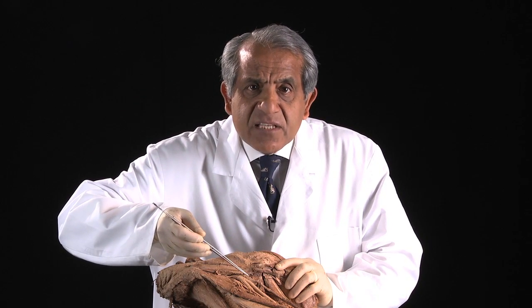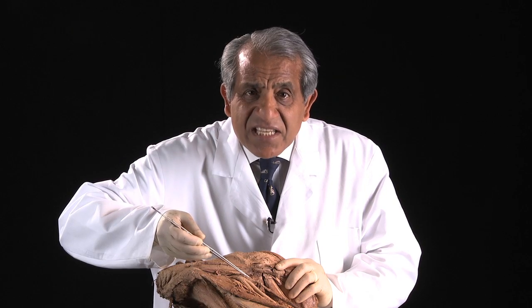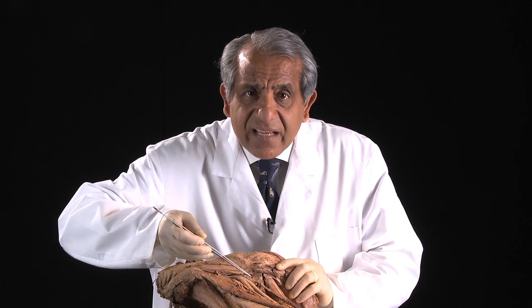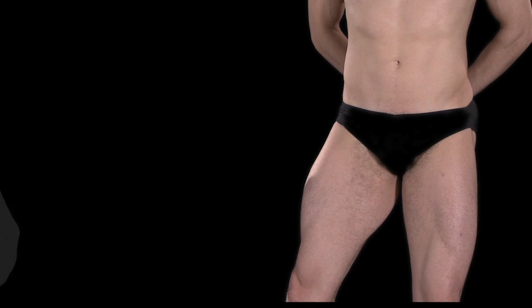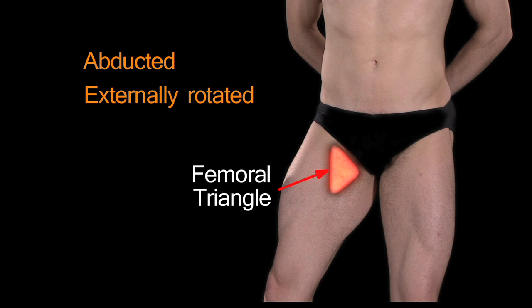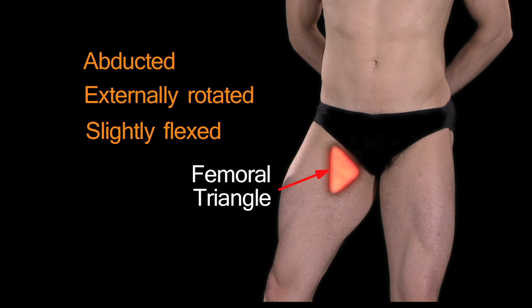Which is why, in order to display things in the femoral triangle adequately, it is necessary to position the subject in a particular way. The thigh needs to be abducted significantly and externally rotated, and perhaps even slightly flexed. Only then do you get a proper view of the femoral triangle.